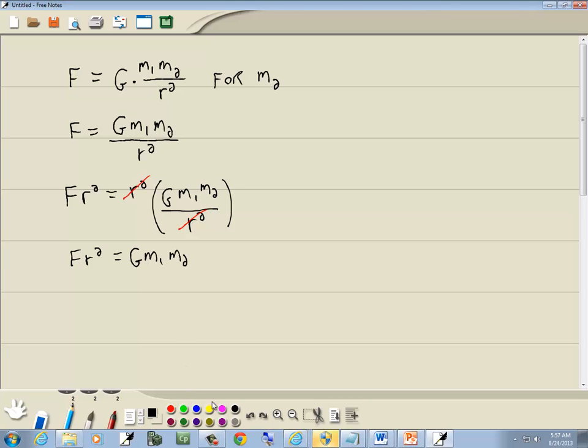Now step 3, get everything with the variable we're solving for on one side, everything else on the other side. We're solving for M sub 2. Everything that has M sub 2 is over on the right side, and everything else is already on the left side. So that's done.